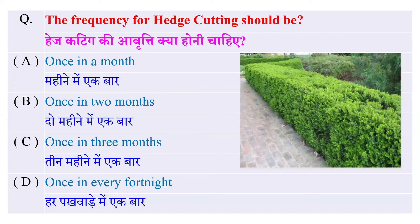The frequency of hedge cutting — hedge cutting की आवृत्ति क्या होनी चाहिए — once in a month, once in two months, once in three months, or once in every fourth night? The right answer is once in two months.